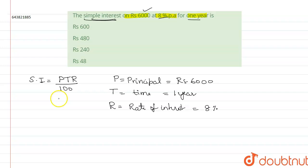So, let us substitute the values. 6,000 into 1 into 8 divided by 100. We can cancel the zeros here. So, we get 8 into 6. 8, 6 is 48 and 1, 0.